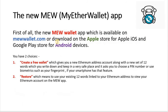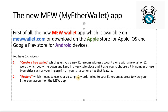Let's have a look at the MEW app. There are two options: create a free wallet, which allows you to create a brand new Ethereum address with a brand new set of 12 words which you write down and keep in a safe place. You also choose a pin number and use biometrics such as your fingerprint to secure the wallet, if your smartphone has that feature. The restore option is for people with existing wallets who want to access their Ethereum account.